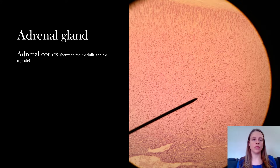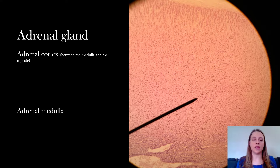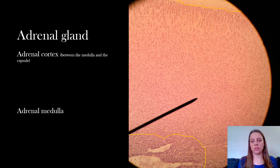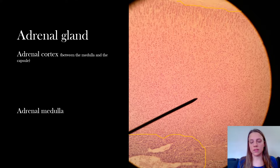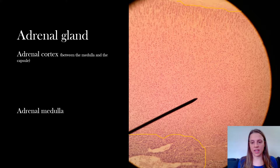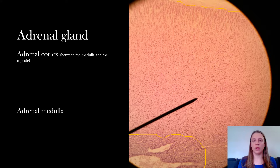The adrenal gland is a little confusing because there's a lot going on. It is composed of the adrenal cortex and the adrenal medulla. On the bottom left I've drawn a circle surrounding the adrenal medulla. The adrenal medulla usually stains slightly darker than the surrounding tissue — in this particular slide the color difference isn't super obvious, but if you look closely it's a little more purple than the surrounding adrenal cortex.